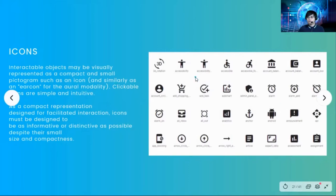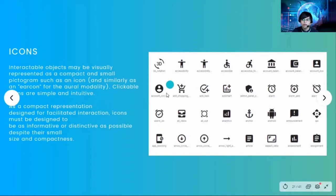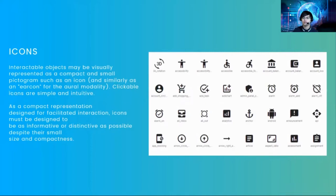For example, an icon that looks like a bell tells you it's an alarm. A shopping cart icon represents a cart. A person icon represents an account or profile. A building icon represents a bank. These are some of the icons you can use when developing a system or software. On Facebook mobile, you see icons rather than text labels for the newsfeed, videos, and new posts.